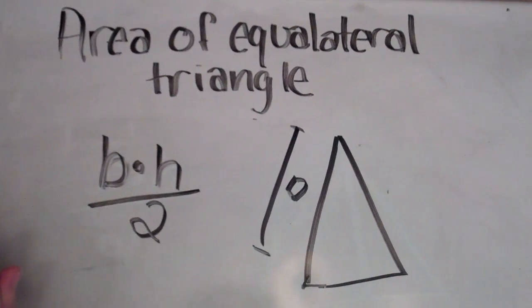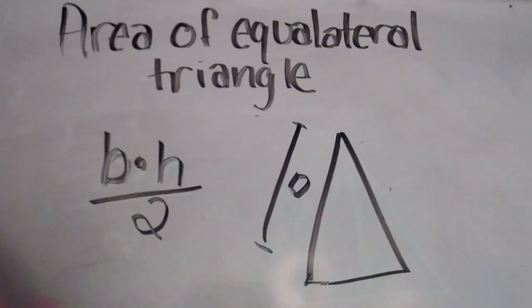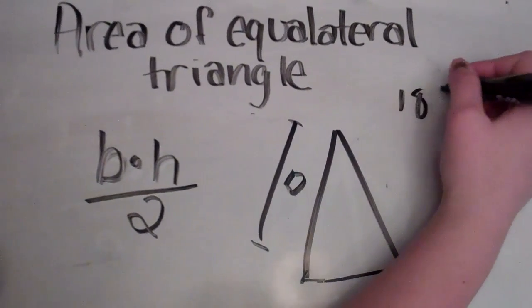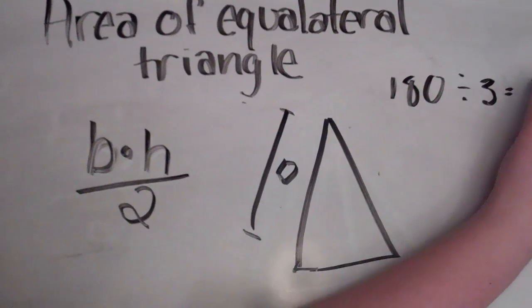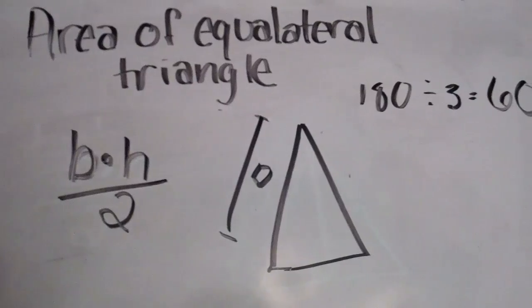And since we are working with an equilateral triangle, we take 180 divided by 3, because everything is congruent in an equilateral triangle, and so each angle would be 60 degrees.